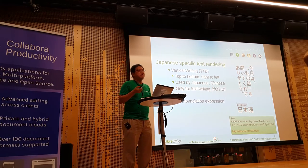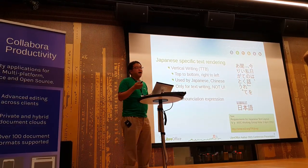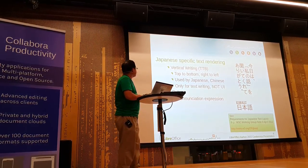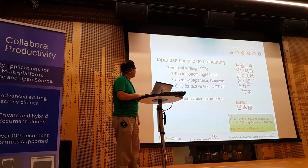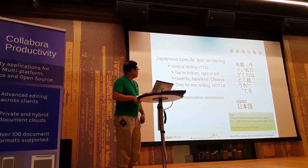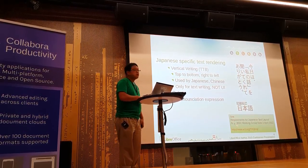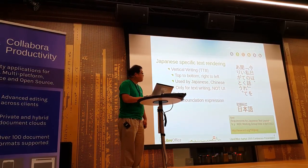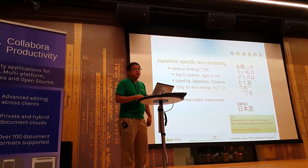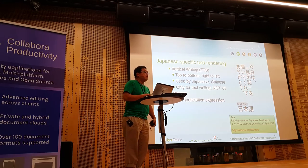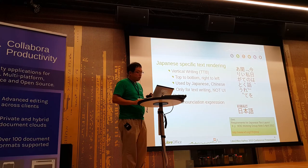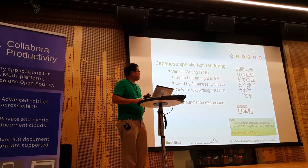It's a little different from RTL languages. Another Japanese-specific text rendering is Ruby. Ruby is a pronunciation expression — for example, like this. We have a very good document about Japanese text layout, provided by W3C. If you want to know about text rendering in Japanese, please refer to that document.